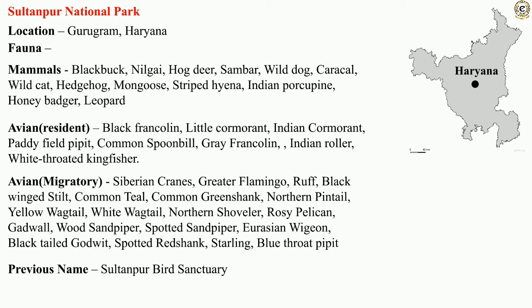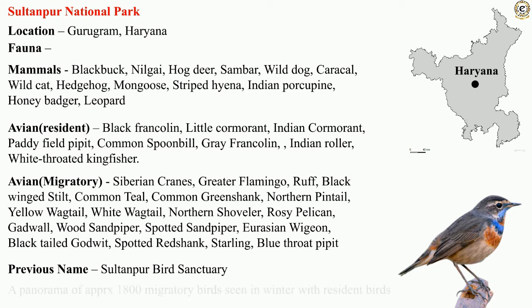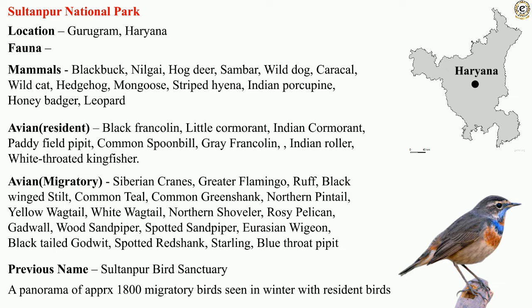common teal, common greenshank, northern pintail, yellow wagtail, white wagtail, northern shoveler, rosy pelican, godwit, wood sandpiper, spotted redshank, starling, bluethroat, and pipit, amongst other varieties — over 1800 migratory bird varieties — can be seen in winters in the Sultanpur National Park.